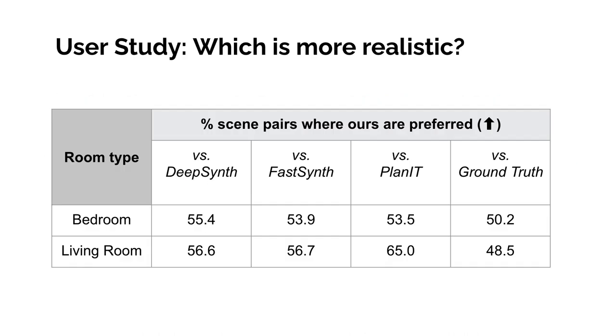We conducted user studies where users are shown pairs of images. Each pair has one image generated by our method and one image from the other method or ground truth. The user chooses the image which looks more realistic. Our scenes are preferred over scenes from all baselines.